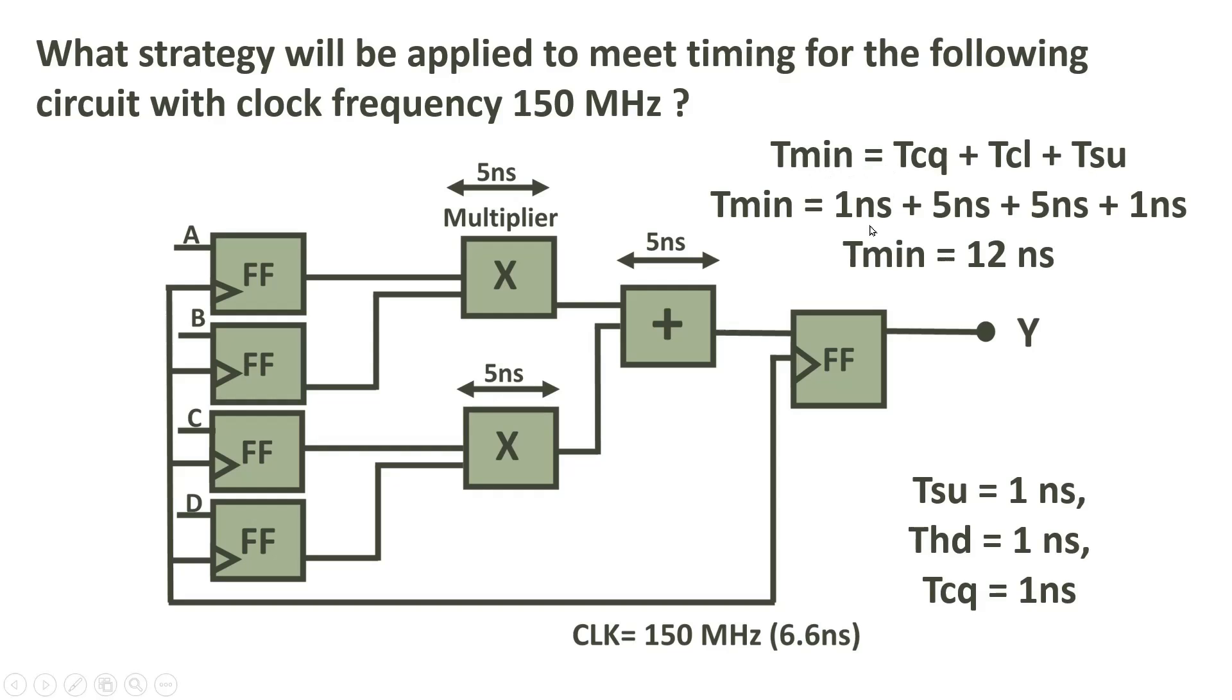Now here I assume that you already know this formula. So T minimum is equal to Tcq. Tcq of the throwing flip-flop. I already told you I am considering 1 nanosecond Tcq for simplicity. So Tcq will be equal to 1 nanosecond for this flip-flop. Now there are two combination logic path delays. 5 nanosecond for multiplier. 5 nanosecond for this summation. So 5 plus 5 plus Tsetup of capturing flip-flop. So this is 1 nanosecond. So T minimum is equal to 12 nanosecond.